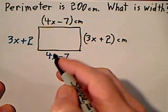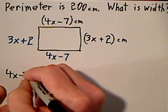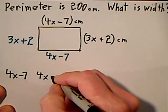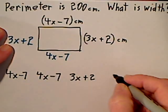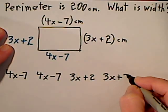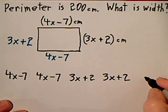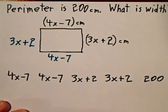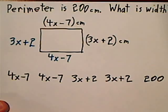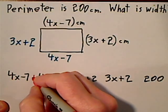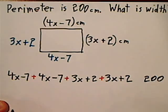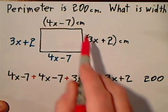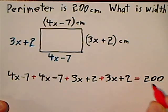So let's deal with these first two, 4x minus 7, 4x minus 7, and then these two, 3x plus 2, 3x plus 2. And altogether that's supposed to equal 200. I said I was going to add up all four sides so I need a plus sign between each of the sides, and the perimeter is the sum of all the sides, so I add these up and they're equal to 200.